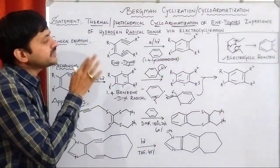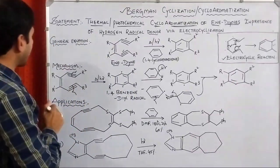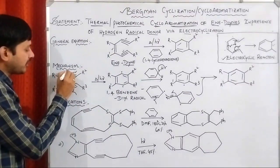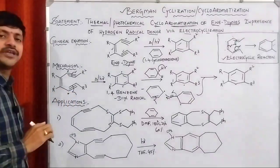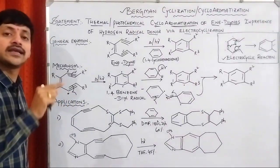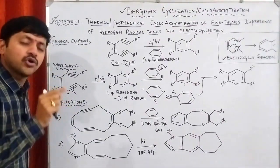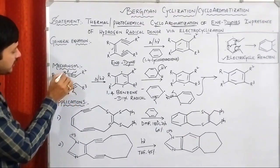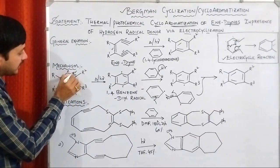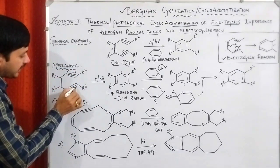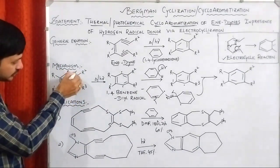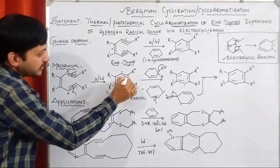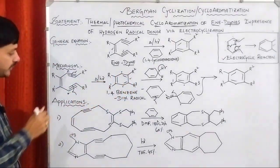The mechanism is very simple. Initially, the two triple bonds are involved in homolytic cleavage. We already know that homolytic cleavage produces free radicals. So radicals are formed, and these two radicals can form a cyclization — the cyclization phenomenon takes place.